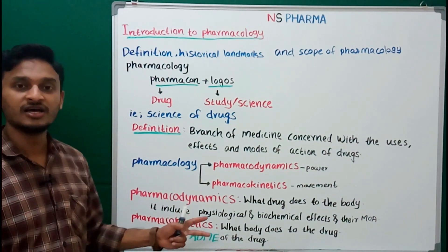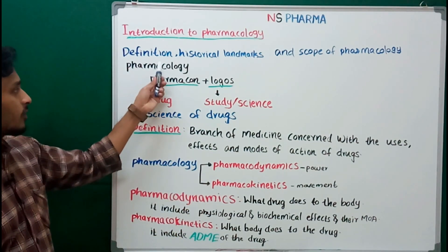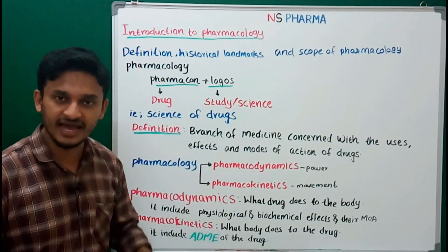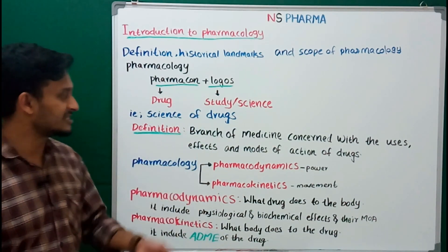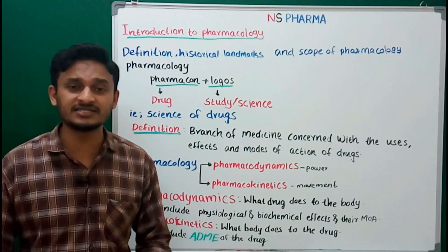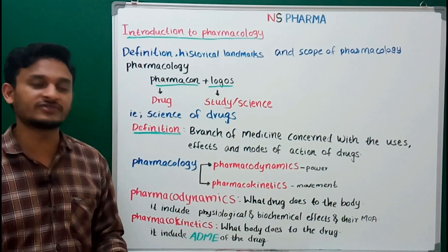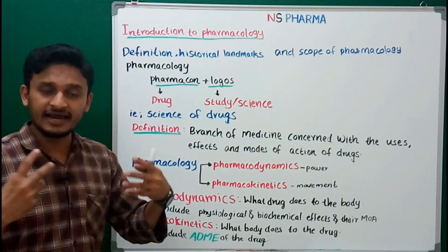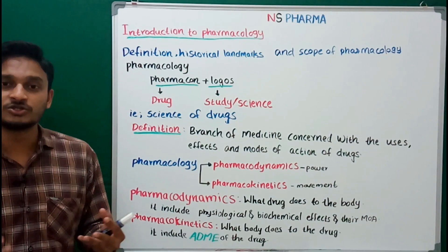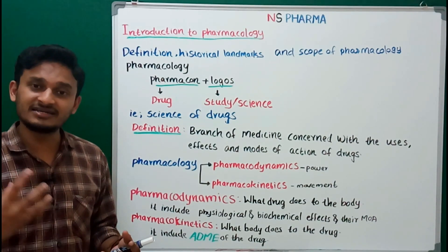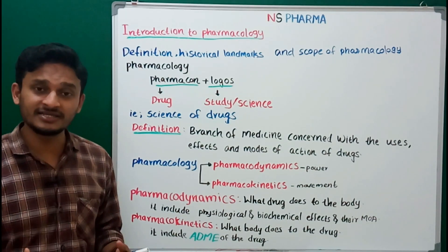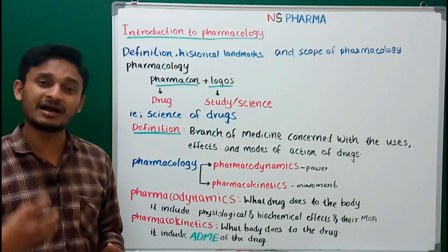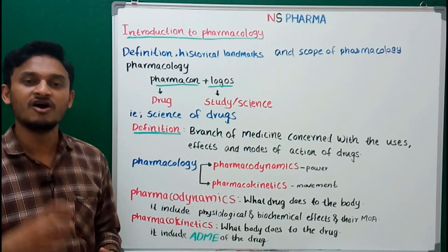To summarize: pharmacology came from pharmacone meaning drug and logos meaning study or science. The definition is the branch of medicine concerned with the uses, effects, and modes of action of the drug. Pharmacology has two main divisions — pharmacodynamics and pharmacokinetics. Dynamics means power, kinetics means movement. Pharmacodynamics is what drug does to the body; pharmacokinetics is what body does to the drug. ADME comes under pharmacokinetics, and mechanism of action comes under pharmacodynamics.